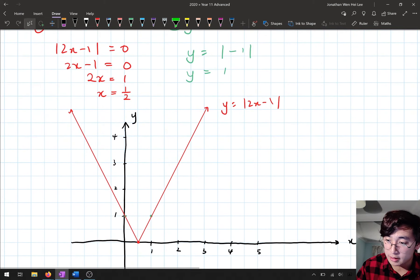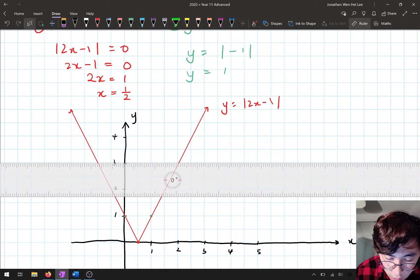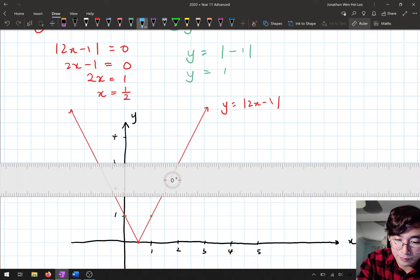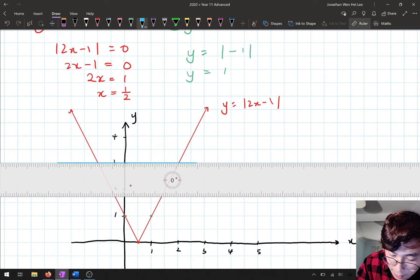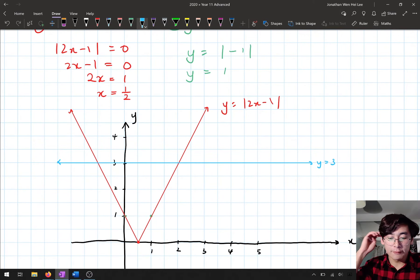So here we're going to go to where 3 is. So I'm going to get my ruler out. I'm going to go to where 3 is, and I'm going to draw a horizontal line at that point. So this is y = 3.